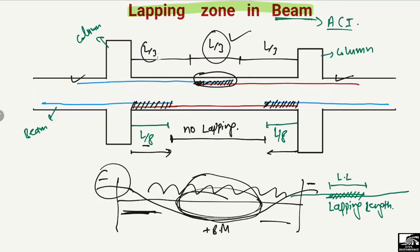In the region directly over the supports, no lapping of bars is allowed. No lapping of the bar is allowed in this region because of the maximum negative bending moment.